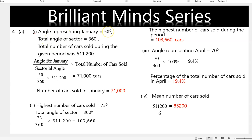The angle representing January in the pie chart is 50 degrees. The total angle of a sector is 360 degrees, because a circle has four quadrants each of 90 degrees. The total number of cars sold during the period was 511,200. So we take 50 divided by 360 multiplied by 511,200, which gives 71,000 cars. Therefore the number of cars sold in January is 71,000.